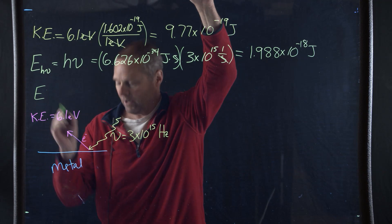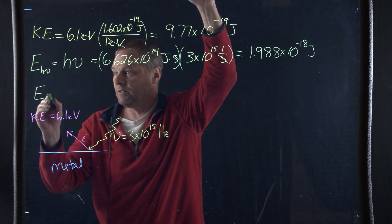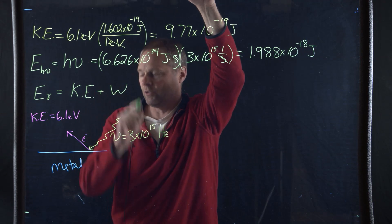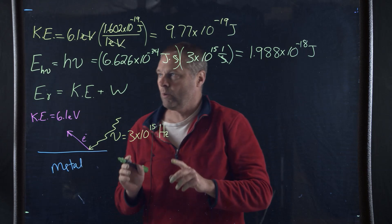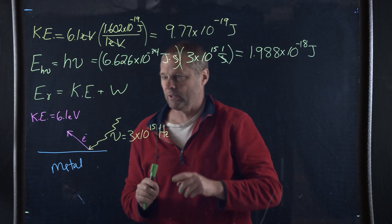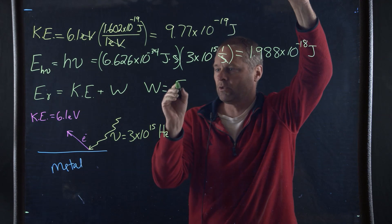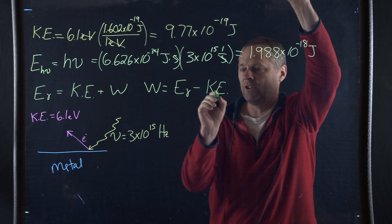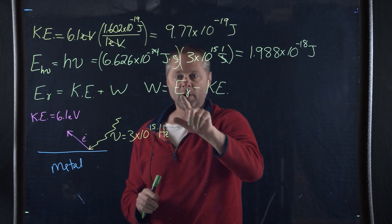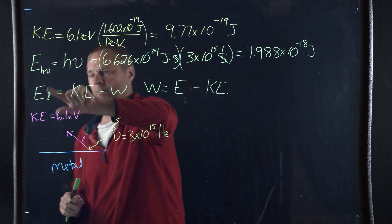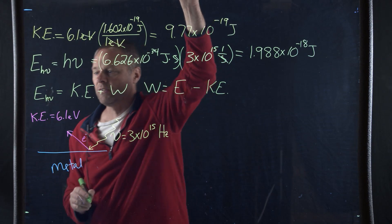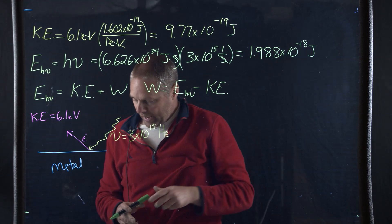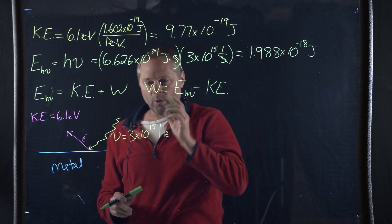The energy of the light that gets ejected equals the kinetic energy plus the work function. So what we want to do is solve for the work function. Work is equal to the energy of the light, H nu, minus the kinetic energy of the ejected electron. This H nu is the energy of the light that comes in, and we want to find the work function.